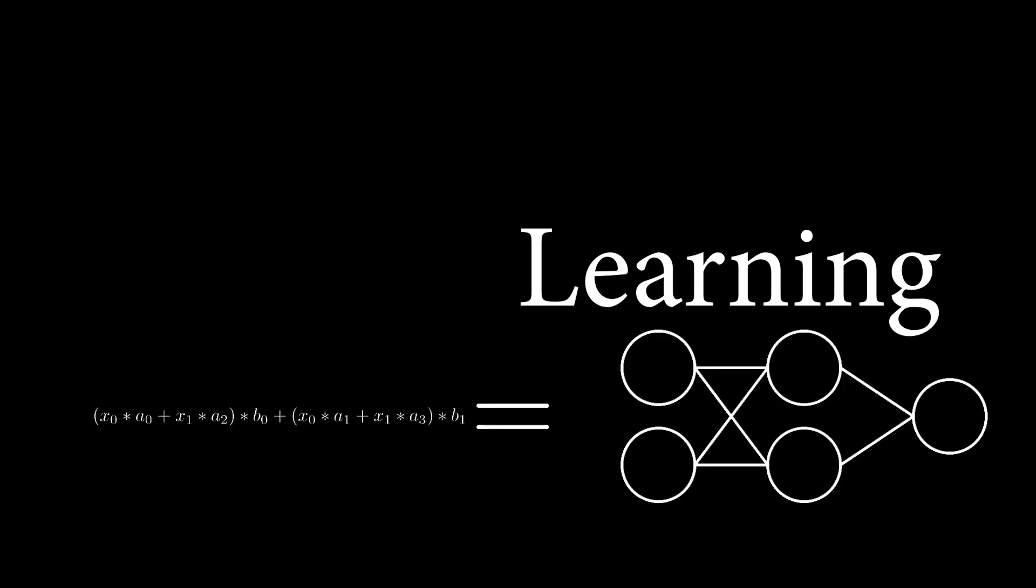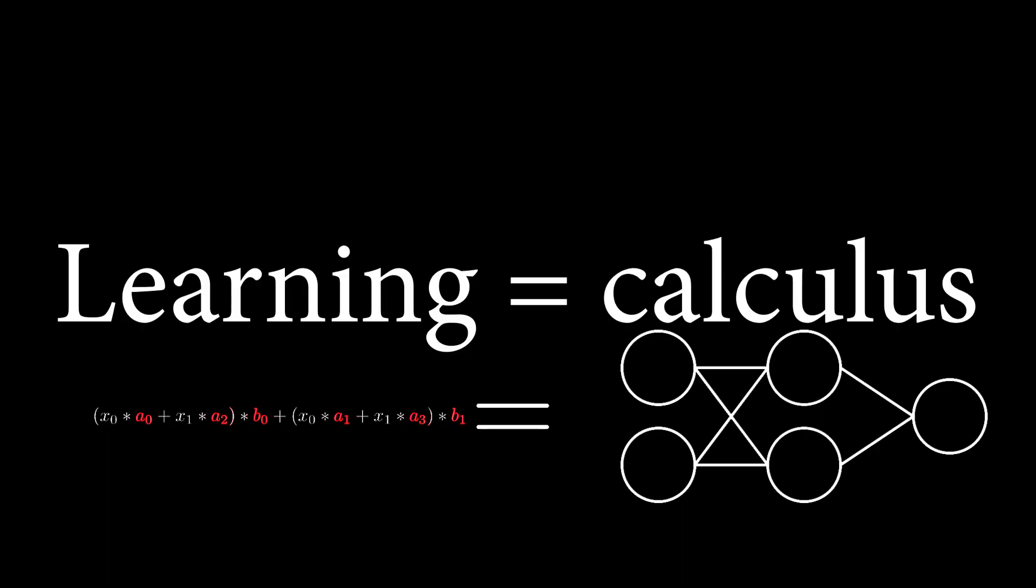And so theory is quite simple, because we just take this function, and then we change the constants, like A's or B's. In practice, though, we could change them randomly, but that would take a really, really, really long time. So instead, to speed it up, we use calculus.